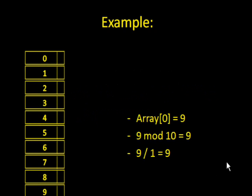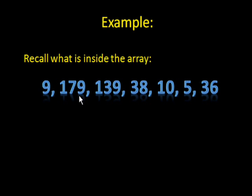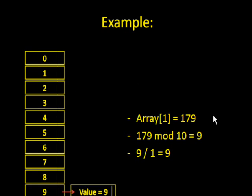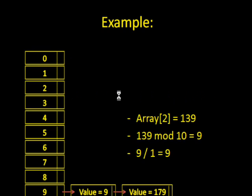So as we start, the first number we have is 9. 9 mod 10 — that means the remainder of 9 divided by 10 — which will be 9. And 9 divided by 1 will be 9. Therefore, we have to put 9 in the 9's list. The next number is 179. 179 mod 10 will be 9, and 9 divided by 1 will be 9, so we also put 179 in the 9's list. The next is 149. 149 mod 10 is 9, and 9 divided by 1 is 9, so we put it in the 9's list.